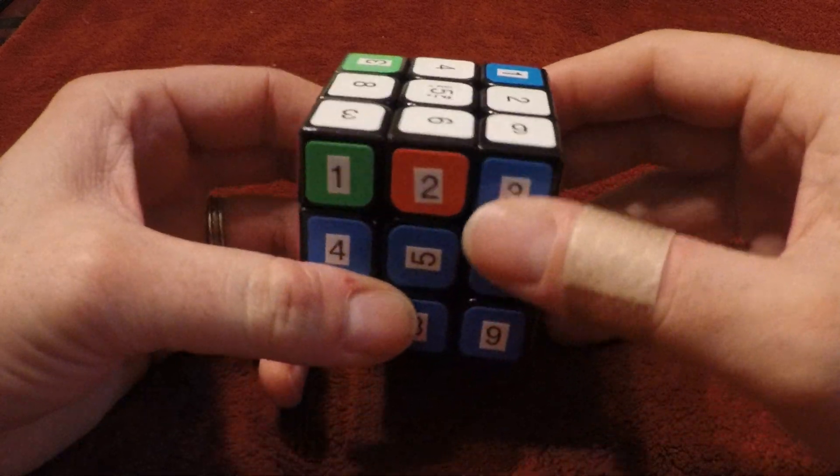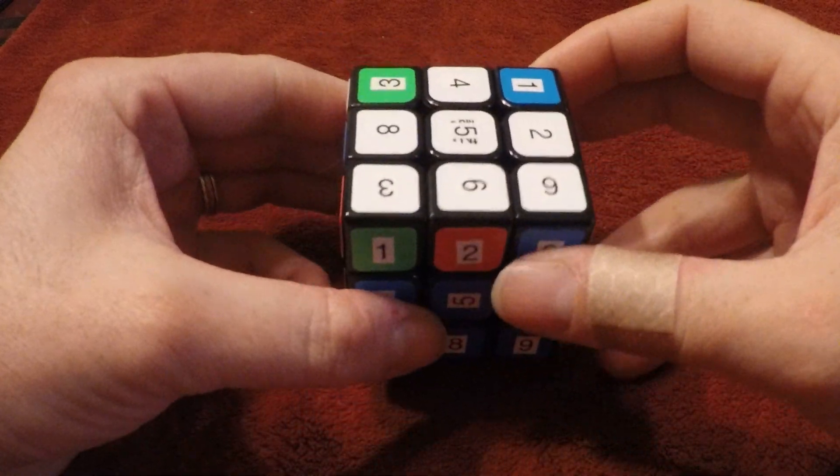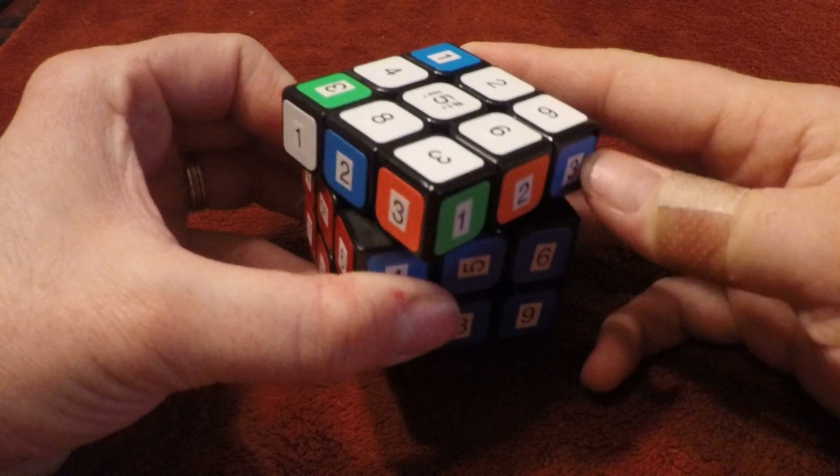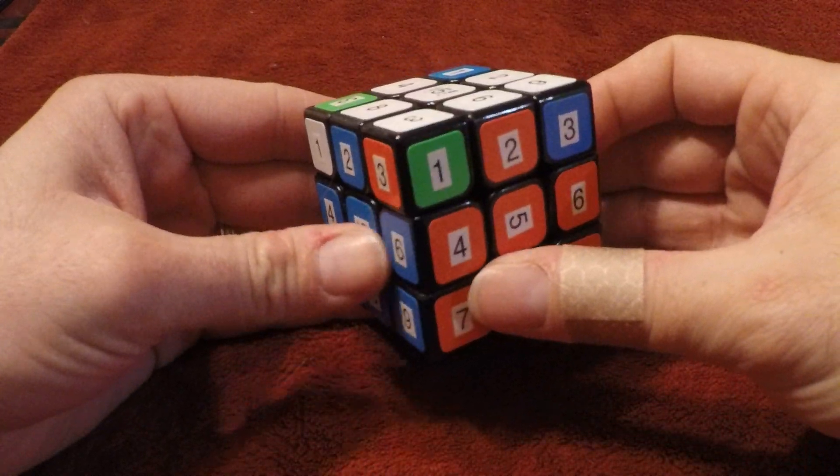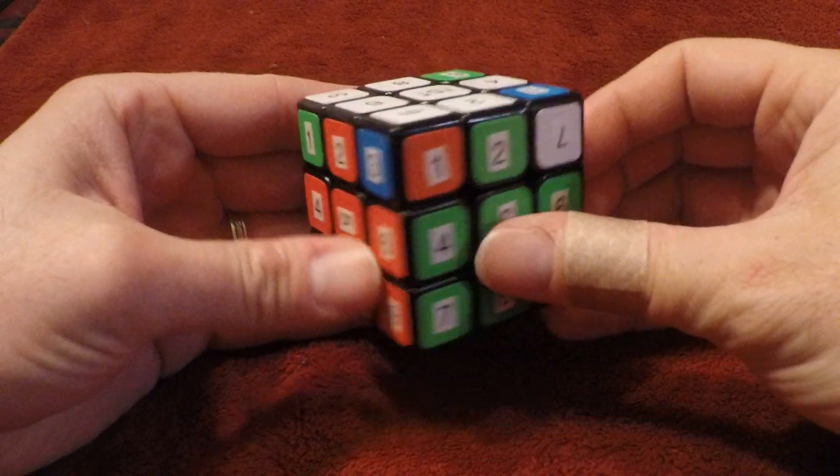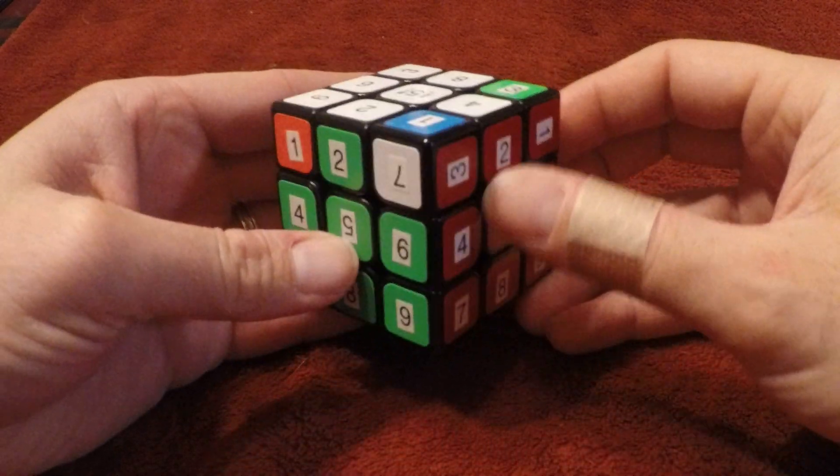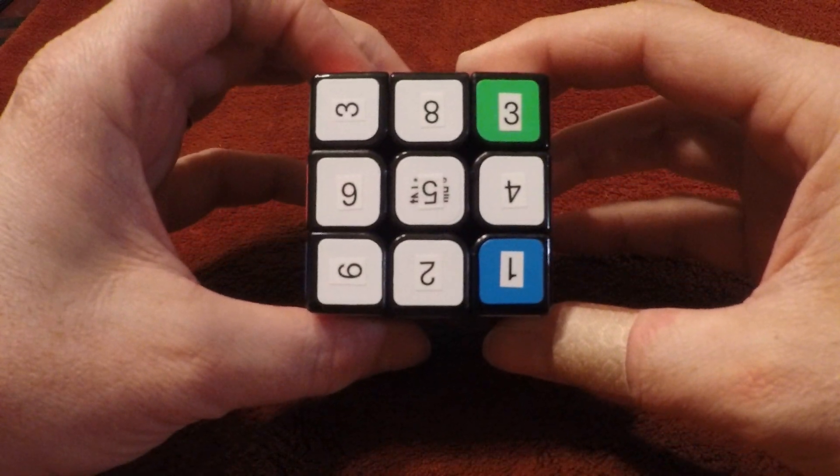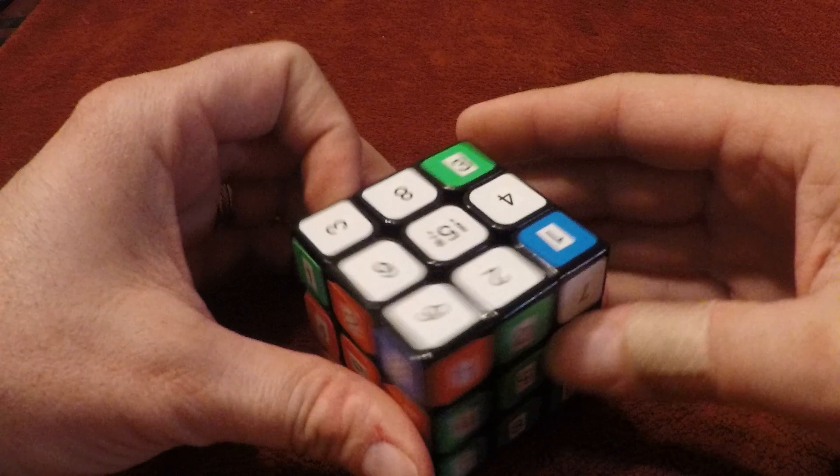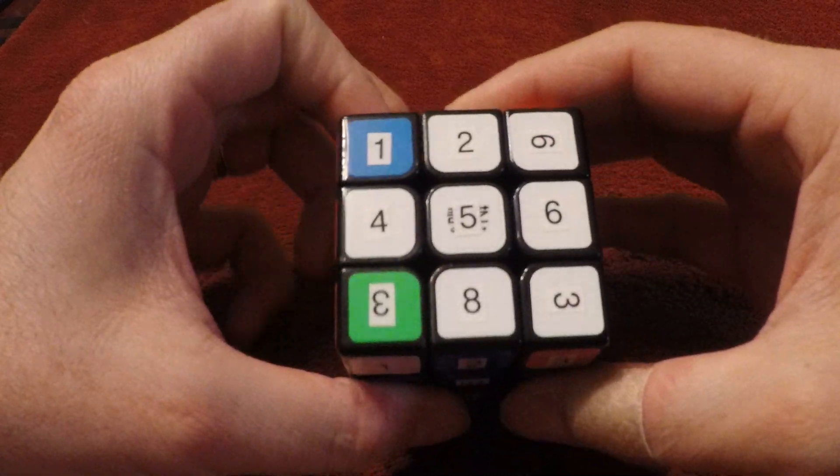Once you have done this, you'll find if you give the top layer one more turn to the right, all four edge pieces should align with the appropriate center colors on each side. And you have correctly formed and aligned the top cross of Layer 3.